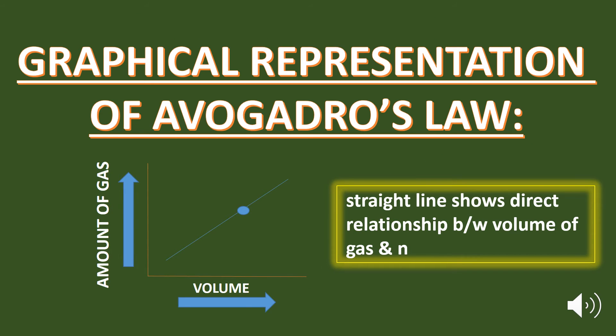Graphical Representation of Avogadro's Law. Graphically, a plot of volume against the amount of gas at constant temperature and pressure is a straight line, which shows the direct relationship between volume and amount of gas. It means that when the amount of gas decreases, the volume also decreases; and when the amount of gas increases, the volume also increases.